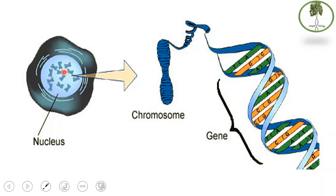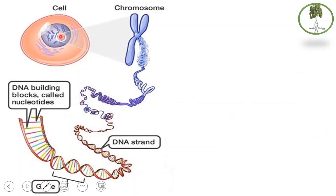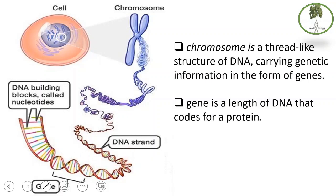We have 46 of these chromosomes inside our nuclei. If you take just one section of this chromosome, one section of this thread, it is called a gene. So a gene is a segment of DNA. The chromosome is a thread-like structure made up of DNA, and the genes are segments of this DNA. In a chromosome you might have a thousand or more genes — we have around 22,000 genes in our cells.